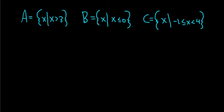B is the set of all x such that x is less than or equal to 0. And C is the set of all x between negative 1 and 4, when you see this you think x is between negative 1 and 4.